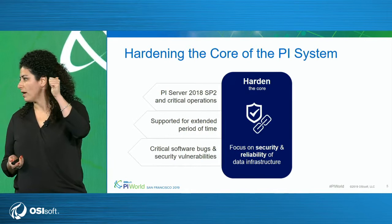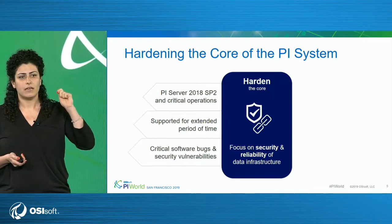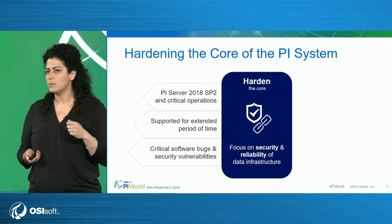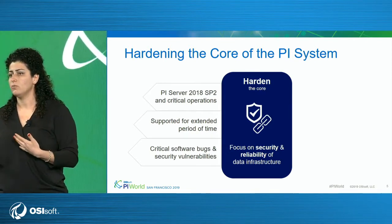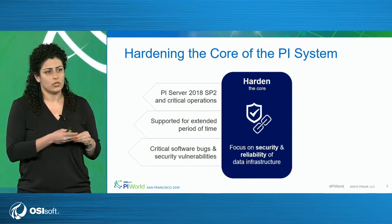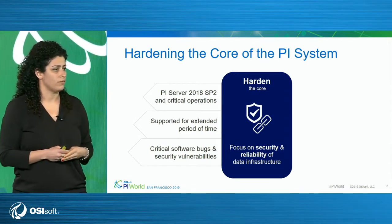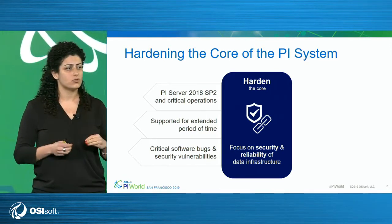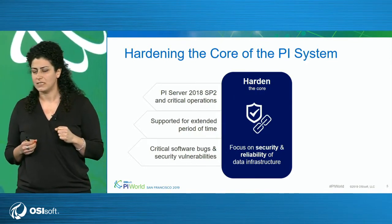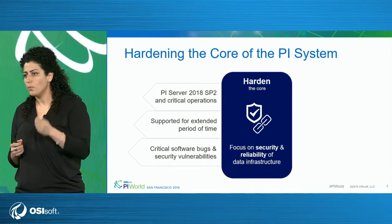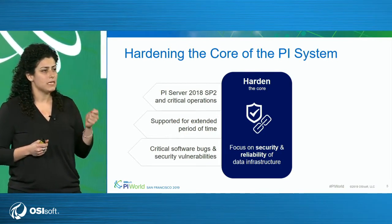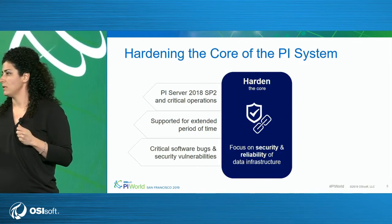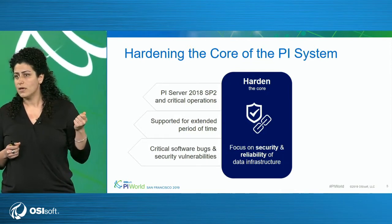The first aspect was hardening the core of the Pi system — focusing on security and reliability. This has been our focus for many years, but we have always been including it with a lot of other improvements, so you were not able to keep up with all of those changes. For Pi server 2018 SP2, security and reliability improvements have been our sole focus. This is the most reliable and most secure Pi server that we have released to date, and it was released yesterday. You can rely on us for supporting this version, 2018 SP2, for many years, covering only those absolutely required changes — fixing critical software bugs and security vulnerabilities.